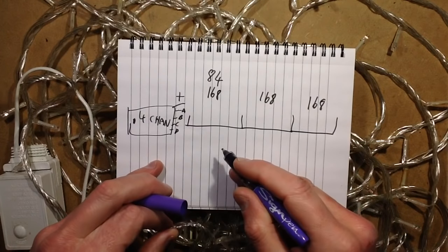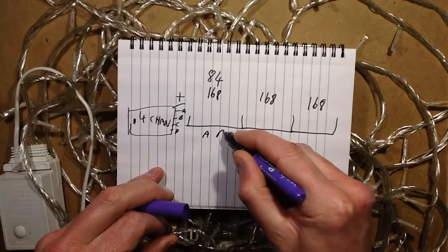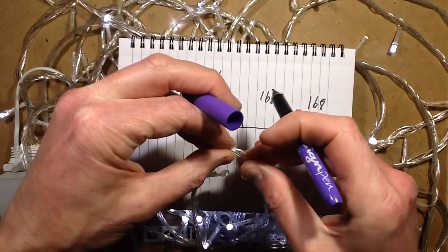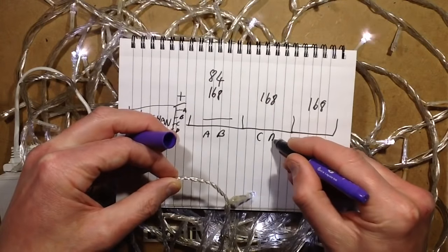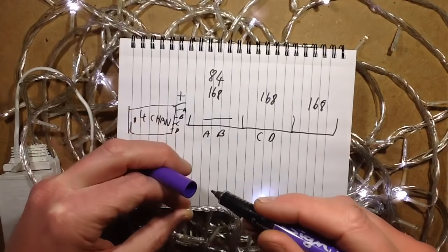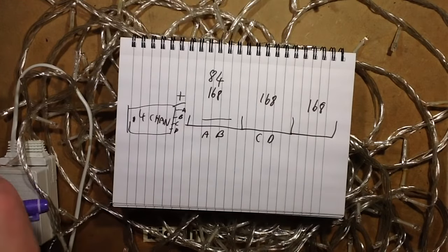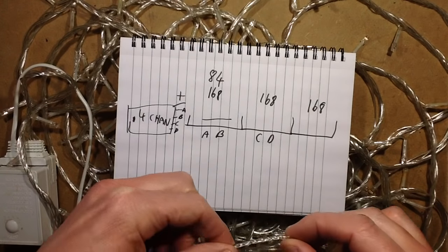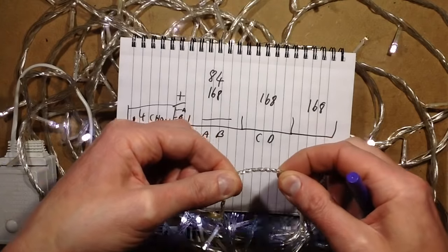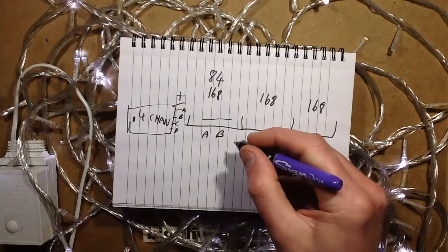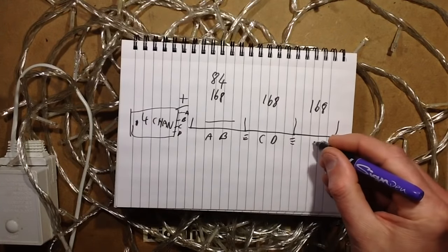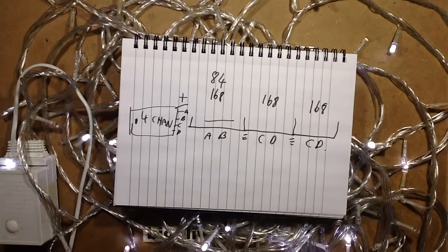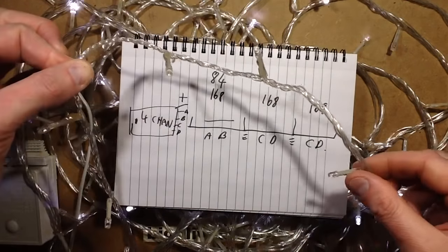So what's really annoying about this set is that it uses channel A and B to do this section of the lights and then all that continues through to the rest of the string here is C and D. But what's a bit more exciting is at the end the last section of the lights is just dead. It's not lit at all.